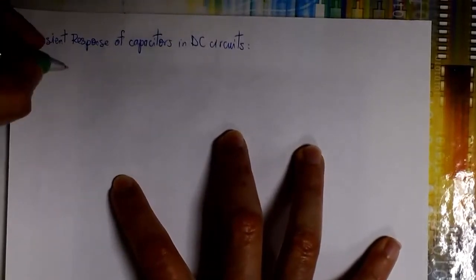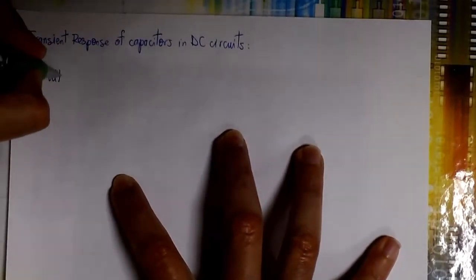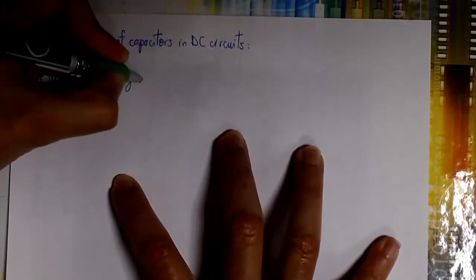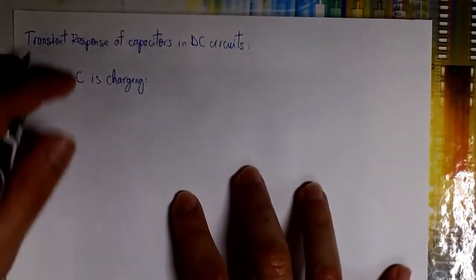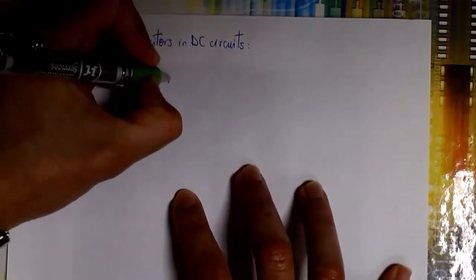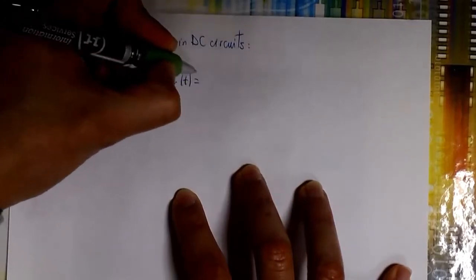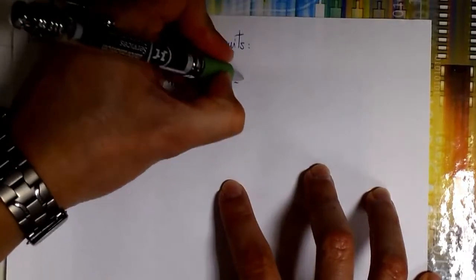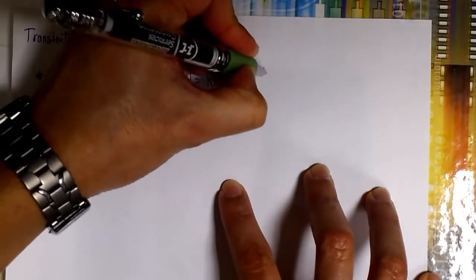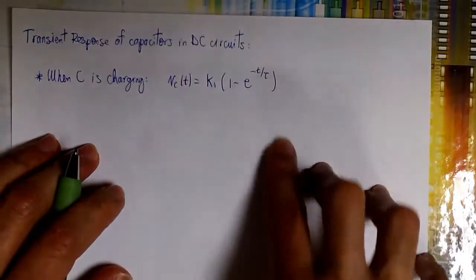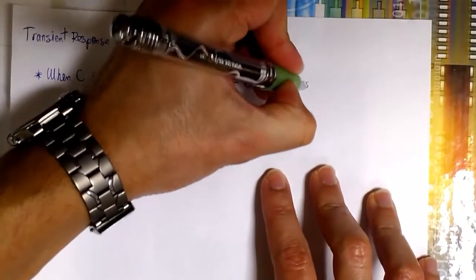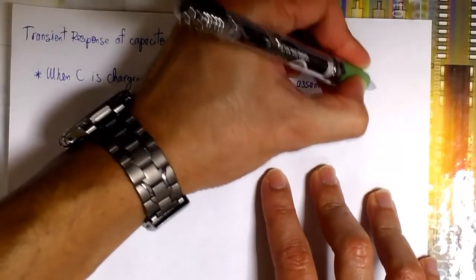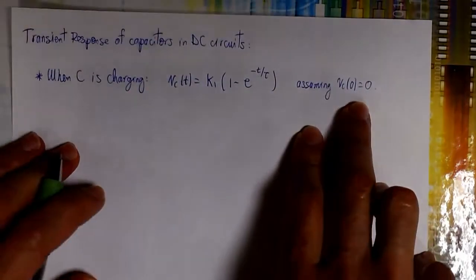We basically have two cases. One is when the capacitor is charging. When we have a capacitor that is charging, the equation we use for the voltage between its terminals is this one. It's going to be a constant k1 times e to the minus t over tau. We're assuming here that the initial value is zero — so at time t equals zero, the capacitor is fully discharged.